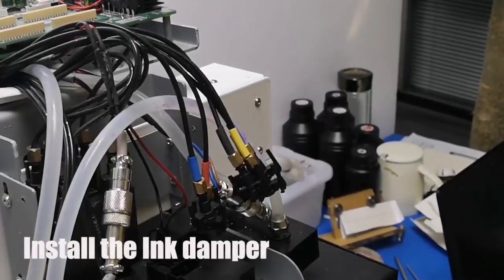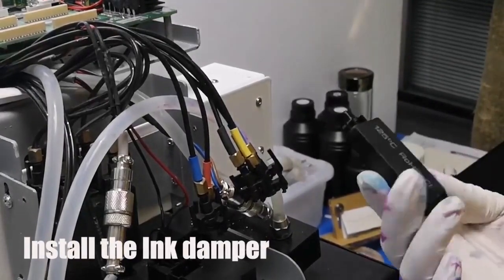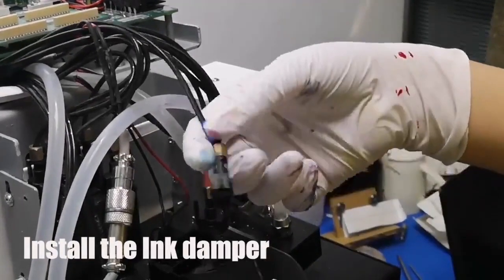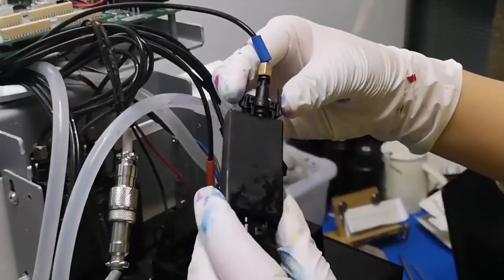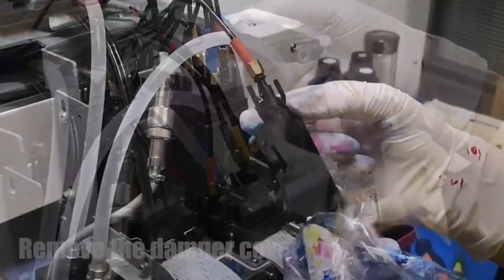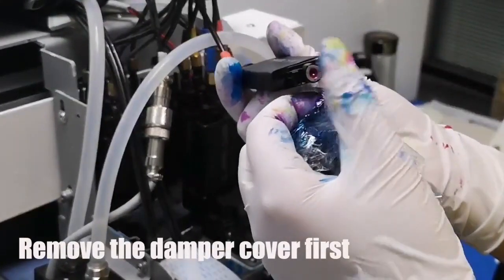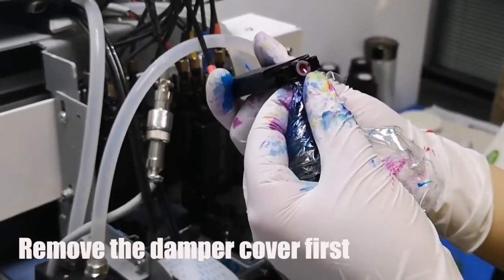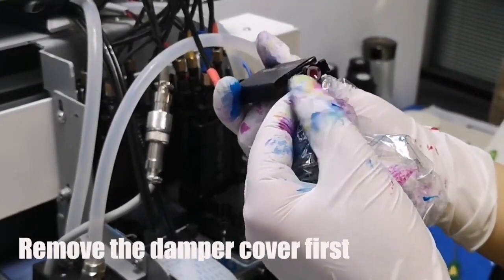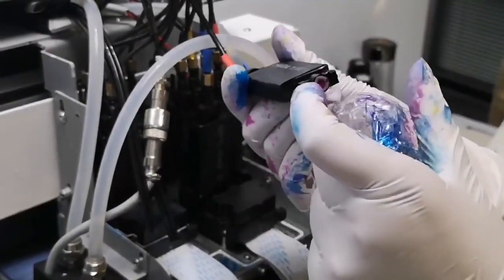After you finish this step, you install the dampers. You install the clean dampers you have. Lock it. Make sure here it's locked. Before you install the ink dampers, you will find that there is a black thing over here. You need to take it off so that you will see the silicon, the silicon things. It has a black cover. You need to take it off.